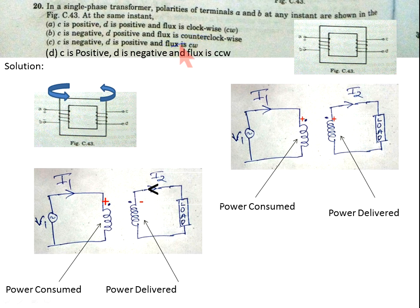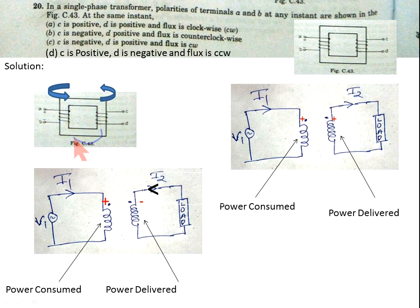Now, regarding the flux direction: since C is the negative terminal and D is the positive terminal, flux is flowing in the clockwise direction. Therefore, option C — C is negative, D is positive, and flux is clockwise — is the correct answer.